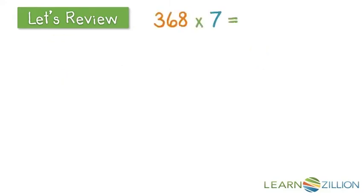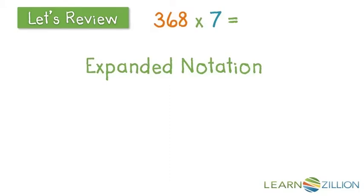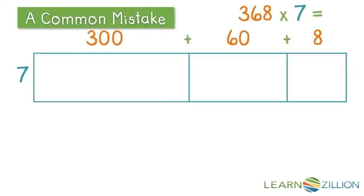Correctly naming numbers in expanded notation is essential to successfully using the area model. In this example, 368 is renamed 300 plus 60 plus 8. We'll get to all the specifics in a moment. But for right now, notice that there are three separate parts to this problem.